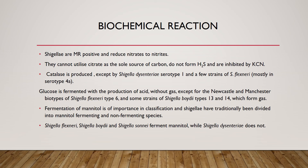Regarding biochemical characteristics, Shigella are MR positive and reduce nitrates to nitrites. They cannot utilize citrate as the sole carbon source, do not form hydrogen sulfide, and are inhibited by KCN. Catalase is produced except by Shigella dysenteriae serotype 1 and a few strains of Shigella flexneri, mostly serotype 4a. Glucose is fermented with production of acid without gas, except for the Newcastle and Manchester biotypes of Shigella flexneri type 6 and some strains of Shigella boydii types 13 and 14, which do form gas.